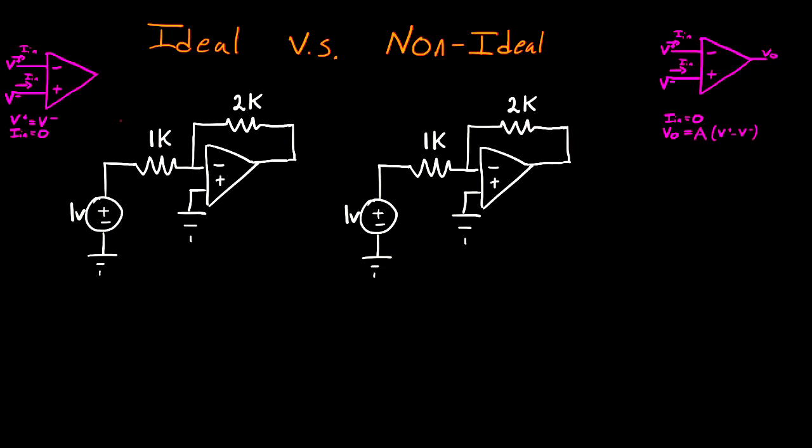In this video, I'm going to be talking about the differences between ideal and non-ideal op amps. In the case of an ideal op amp, we have two primary assumptions. The first is that V plus and V minus are the same potential, and the second is that no current is going into the negative or positive inputs of my op amp.